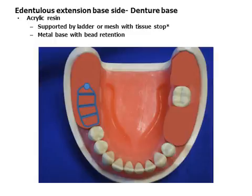In rare instances, metal bases may be used when little vertical space exists or relining is not anticipated. The retainer element contacts the stone cast at the terminal end to support the base during processing.